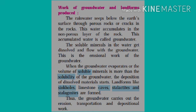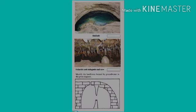When the groundwater evaporates or the volume of soluble minerals is more than the solubility of the groundwater, deposition of dissolved materials starts. Because of those dissolution materials, landforms under the ground like sinkholes, limestone caves, stalactites and stalagmites are formed. In this way, the groundwater carries out erosion, depositional and transportation work continuously.